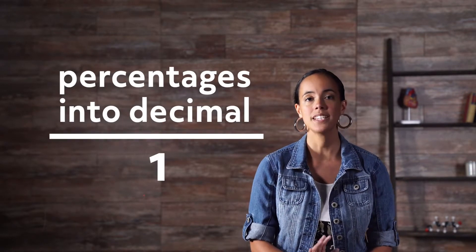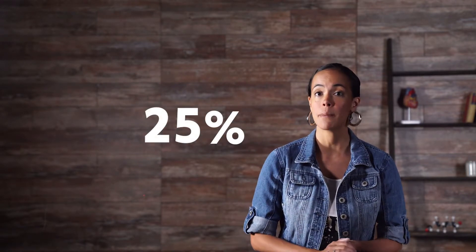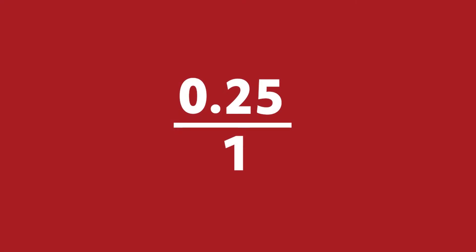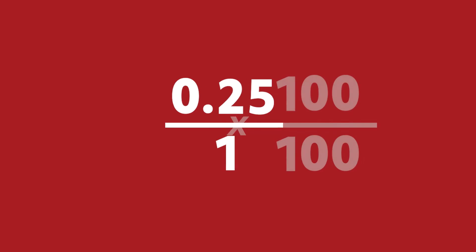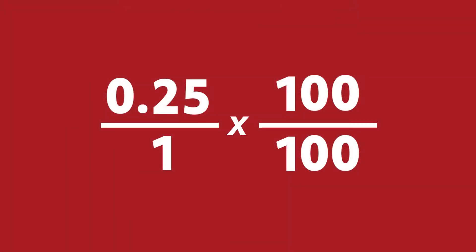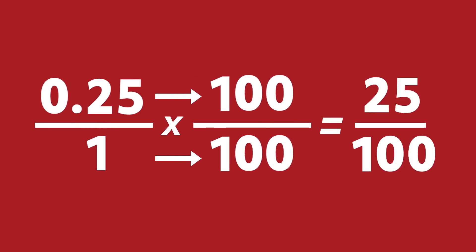Let's use 25 again. 25% becomes 0.25. Now we divide that by 1. Next, for every number after the decimal point, multiply by 10. Since there are two numbers after the decimal in our example, we multiply 10 twice. If there were four numbers after the decimal, we would multiply 10 four times. The multiplication factor is essential to remember — you're not adding 10 after each decimal point, you're multiplying. In this case, you'll multiply 10 times 10, which equals 100. So you'll multiply the top number and the bottom number by 100. 0.25 over 1 times 100 over 100 equals 25 over 100.